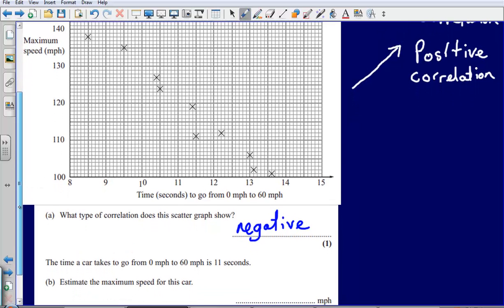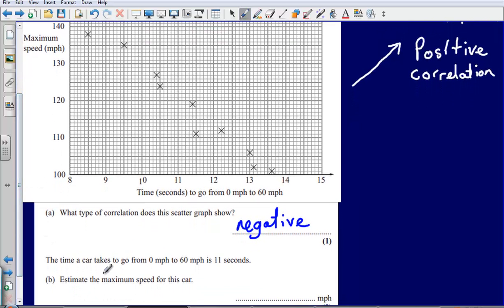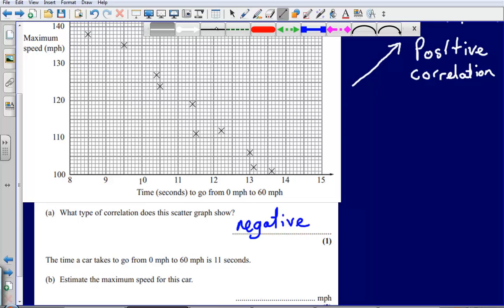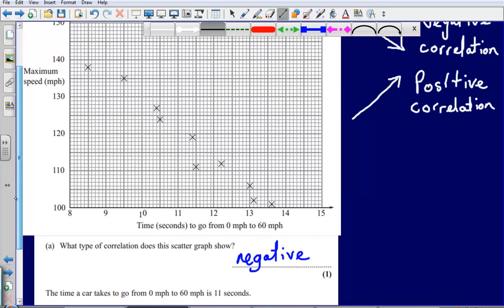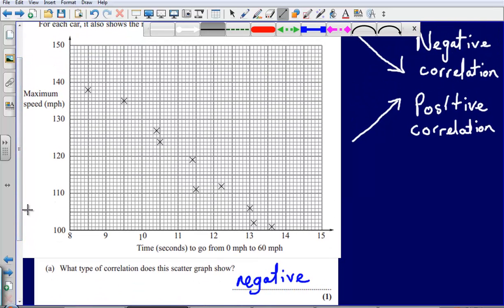Question 2 asks us to estimate the maximum speed of a car that takes 11 seconds to go from 0 to 60. Now the way in which we are going to do this, even though it hasn't told us to do so, is we are going to draw a line of best fit onto our scatter graph. So always, don't worry what the question is asking you to do, draw a line of best fit—chances are it might come in handy.